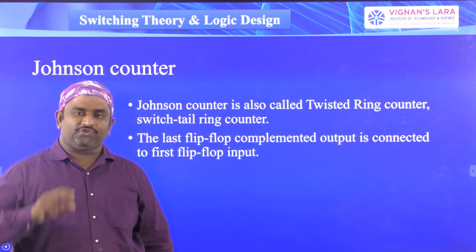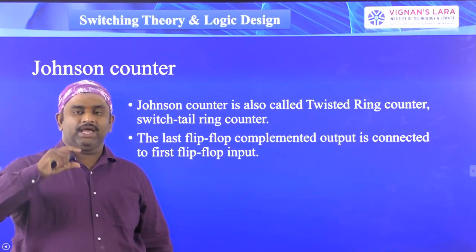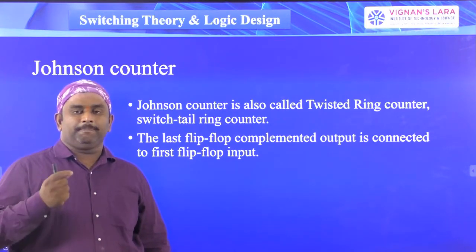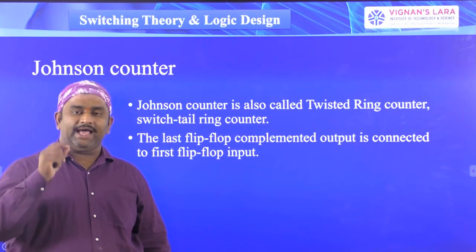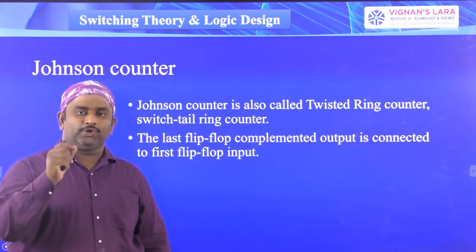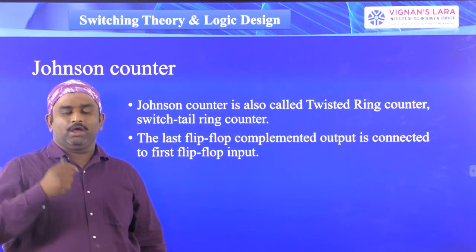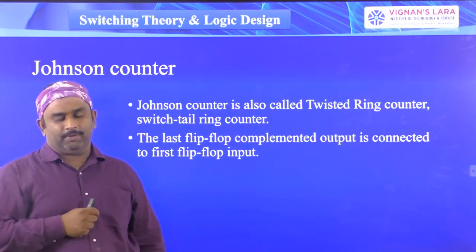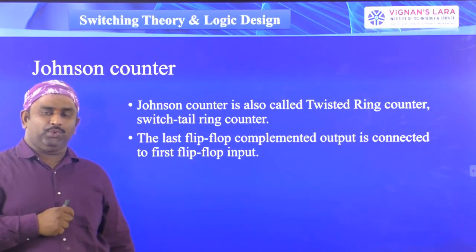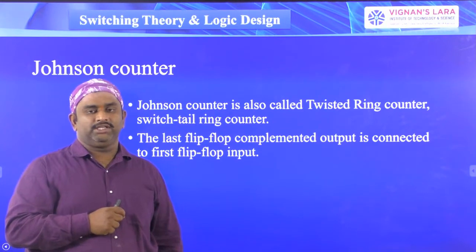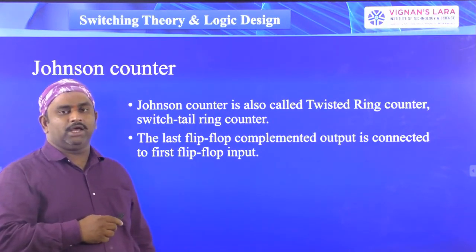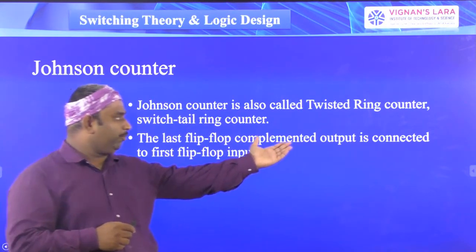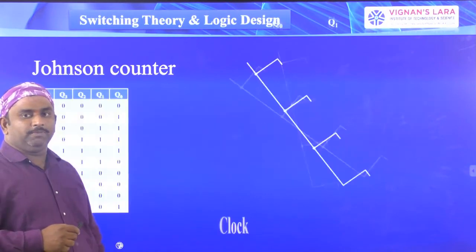It is called a twisted ring counter because at the last flip-flop output we are twisting the connection. In the ring counter, the last flip-flop output Q3 was connected to the first flip-flop input. In the Johnson counter, we connect the Q3-bar (complemented) output to the first flip-flop input. This is the only modification performed, making it a very simple counter compared to the ring counter.